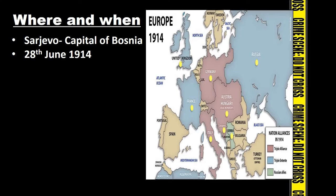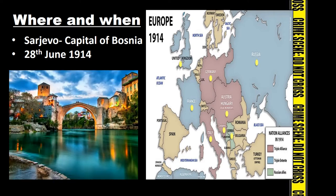They killed him in Sarajevo, which is the capital of Bosnia, and this took place on the 28th of June 1914. As you can see with the map on the right-hand side, Austria-Hungary was a large country at this time looking to expand its empire. The Black Hand Gang and other countries like Serbia didn't want this to happen, so they set out to assassinate the Archduke in Sarajevo on the 28th of June 1914.